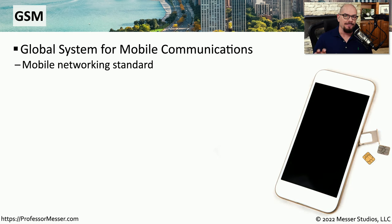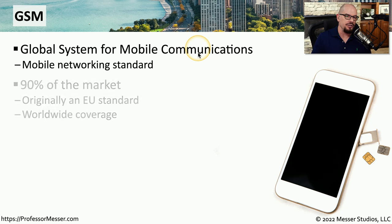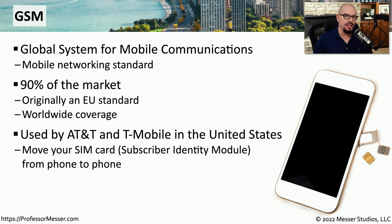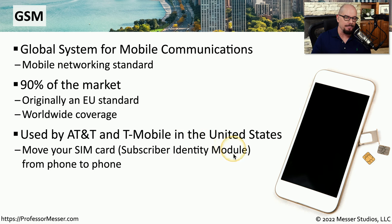GSM was a big part of that very early cellular network — the Global System for Mobile Communications. GSM was about 90% of the worldwide market. It was a standard in the European Union, and it allowed you to have coverage wherever you happen to travel in the world. In the United States, common GSM networks were the AT&T network and T-Mobile network. This GSM network allowed you to have all of your phone configurations on a subscriber identity module, or a SIM card, and you could move that card from phone to phone and your phone number would follow you.